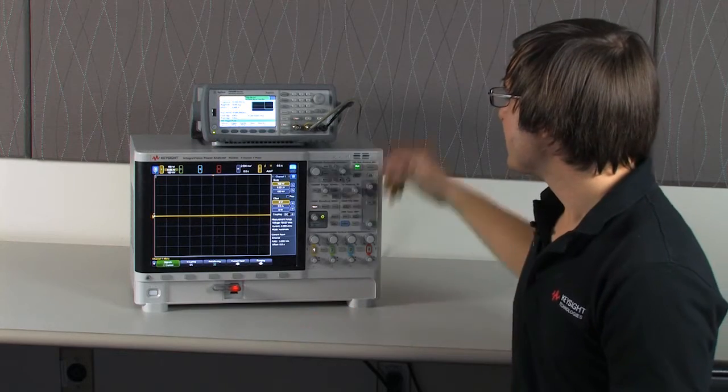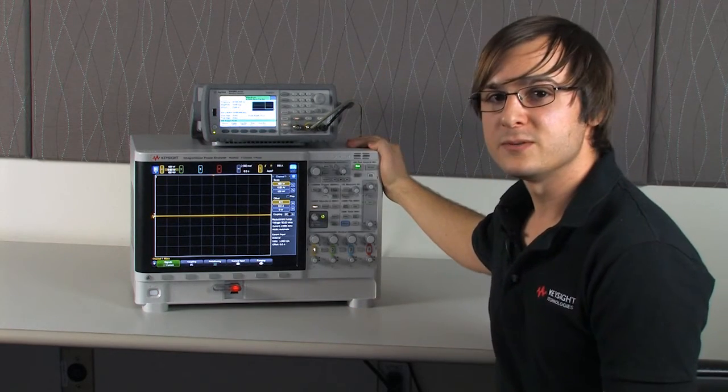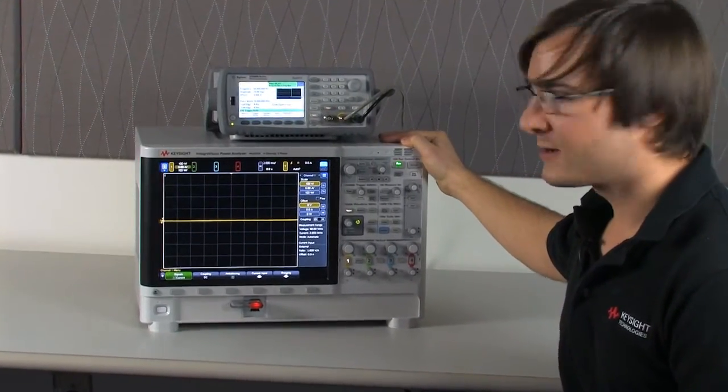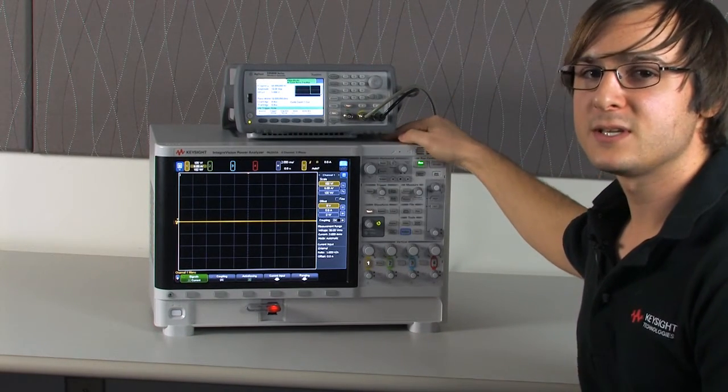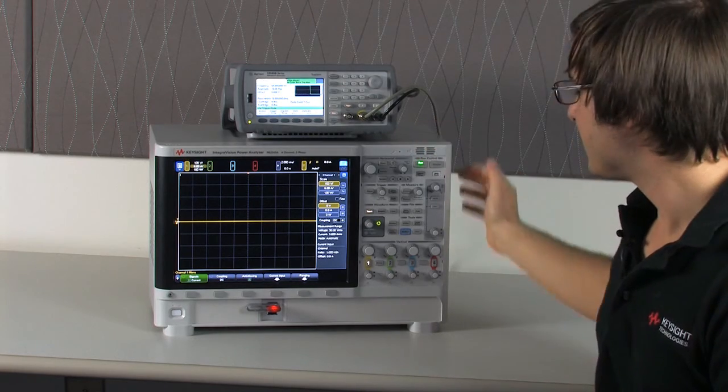I'll explain my test setup here quickly. I have a function generator hooked up to the external current transducer input on the first channel of the power analyzer, and it's set up to input a 10 amp, 16 millisecond square pulse. This will be perfect for running the I-squared-T test.